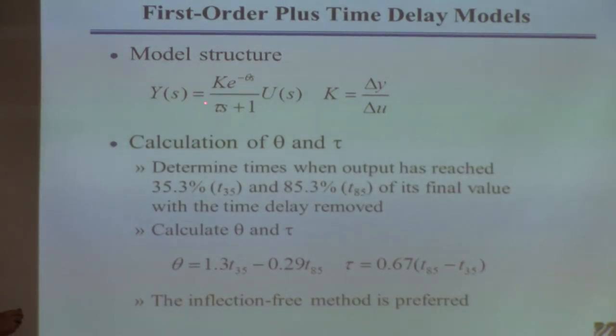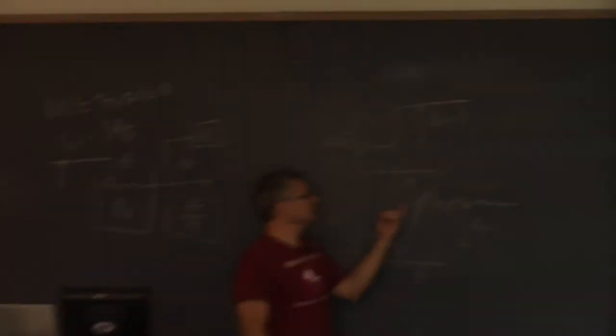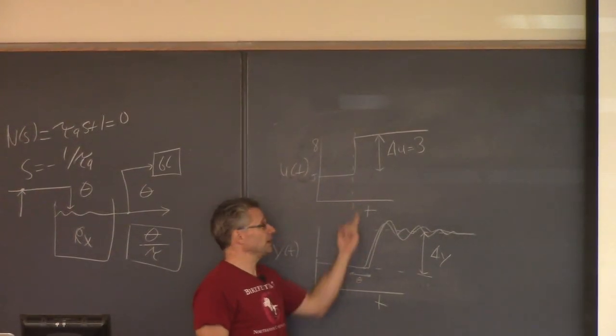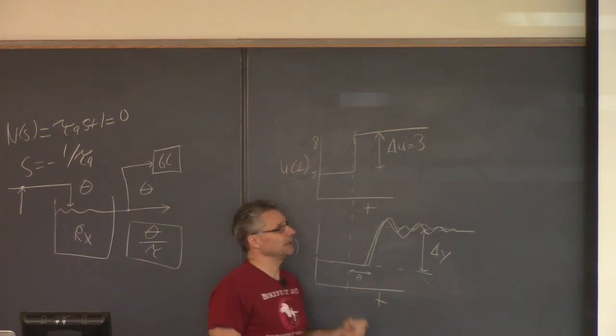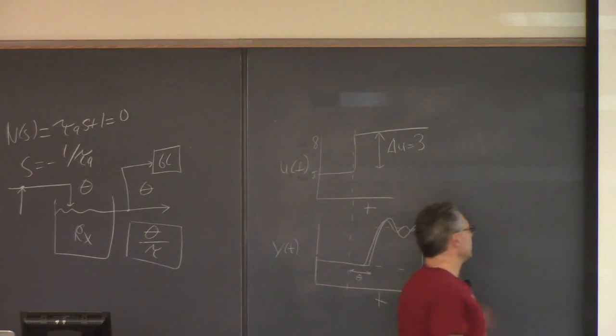Why would I have a time delay? Because I might have data like this - pretend it doesn't oscillate. You can see there's a time delay. In other words, I changed the input at 2 o'clock, and then the output didn't start changing until 2:15. So there must be a time delay in the problem. Otherwise it looks first order. So I'm going to try a model that looks like this: first order plus time delay.